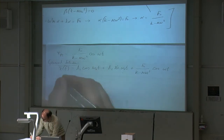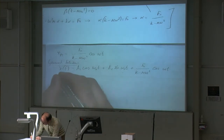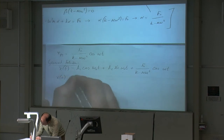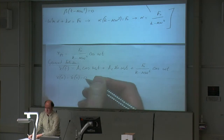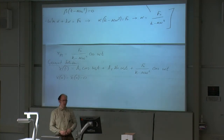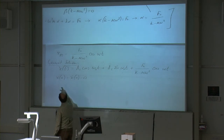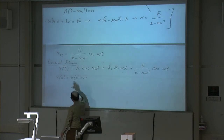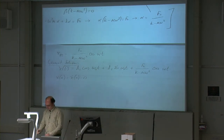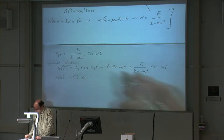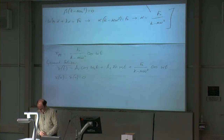Now we must apply the initial conditions. We said the system is initially at rest, so x(0) equals 0 and x-dot(0) equals 0. When time is 0, the displacement is 0, and when time is 0, the velocity is also 0. So we have to apply those conditions to the general solution and to its derivative.